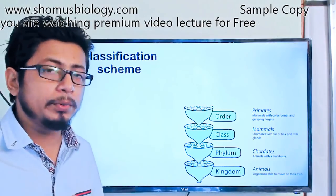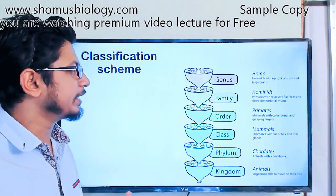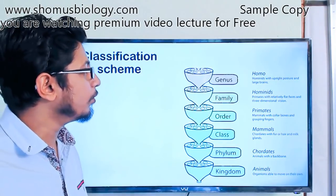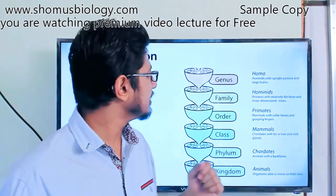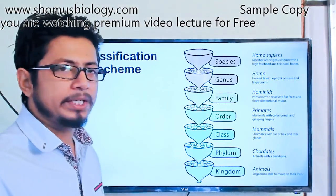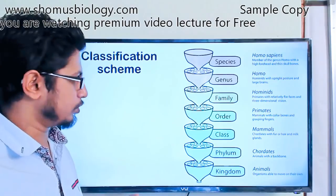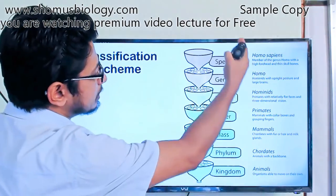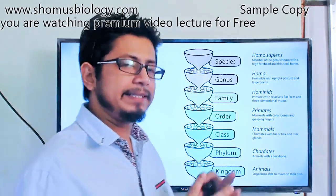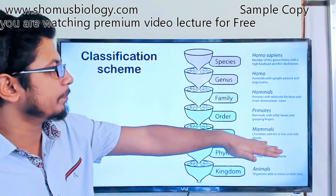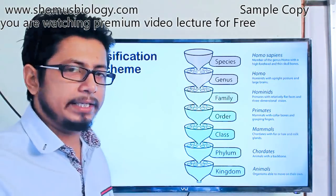Breaking class down gives order — humans are in order Primates. Breaking order down gives family — humans belong to family Hominidae. Breaking family down gives genus — we belong to genus Homo. Hominids with upright posture belong to genus Homo. Finally, breaking genus down gives species — our species is Homo sapiens. Genus Homo is characterized by a high forehead and thin skull bones. This is how we trace one species within the large animal kingdom.